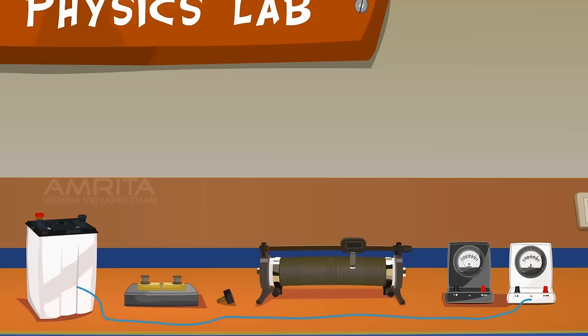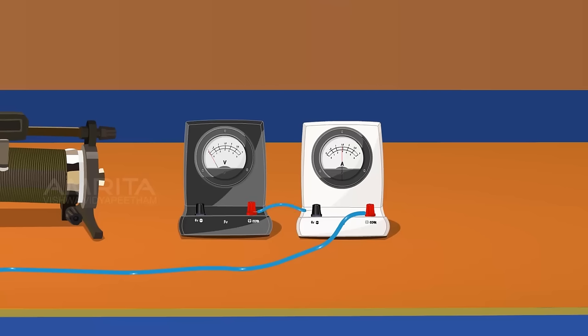Connect the positive terminal of the battery to the positive terminal of the ammeter. Connect the other end of the ammeter to the positive terminal of the voltmeter using a connecting wire.